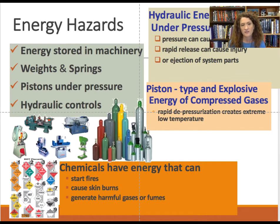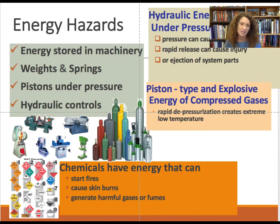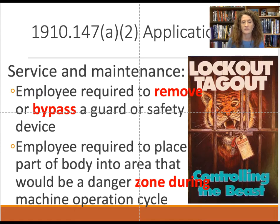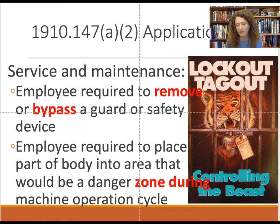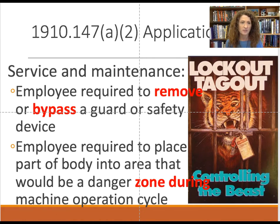Different kinds of energy sources to identify include energy stored inside a machine — such as machines with weights, springs, or pistons under pressure — which must be released so it doesn't injure someone. Chemical hazards can start fires, cause skin burns, or release harmful gases. Sometimes it's the shutdown or startup process, such as equipment cooling, that causes a release of energy. Always proceed with caution and identify which energy sources need to be isolated.